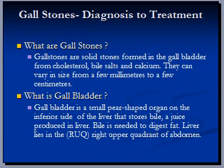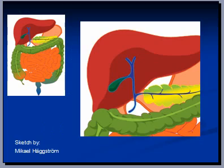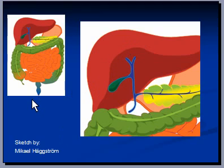Gallstones are solid stones formed in the gallbladder from cholesterol, bile salts, and calcium. They can vary in size from a few millimeters to a few centimeters. The gallbladder is a small pear-shaped organ that lies on the inferior side of the liver and stores bile. Bile is a juice produced in the liver and is required to digest fat.